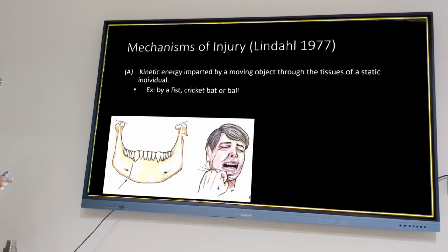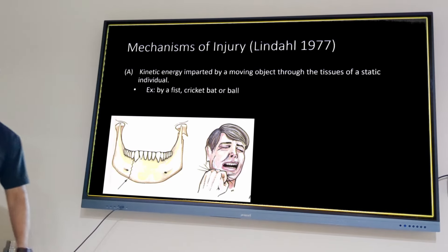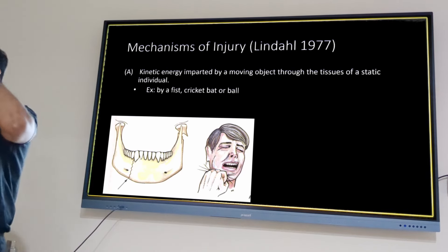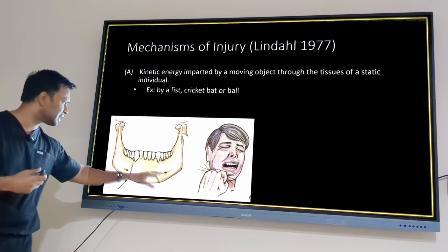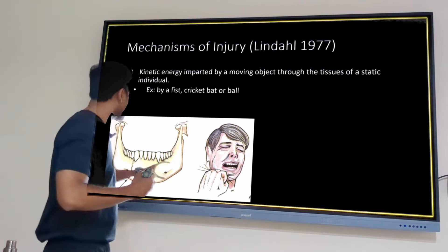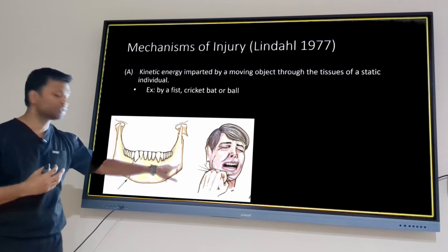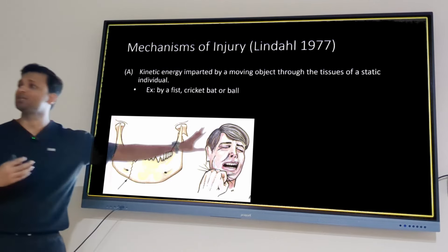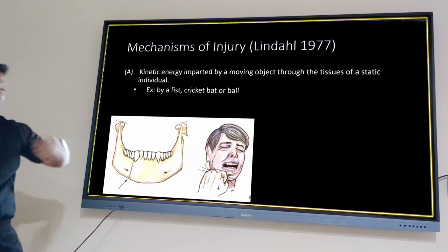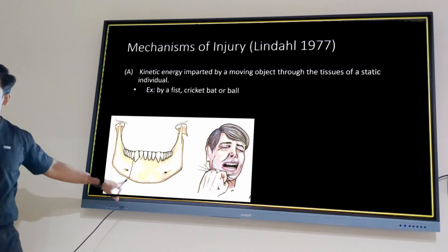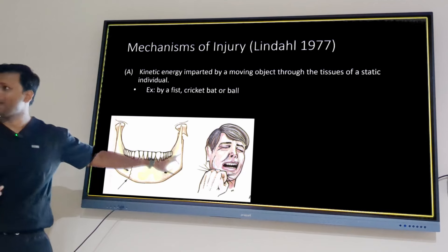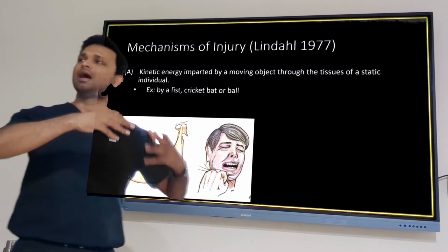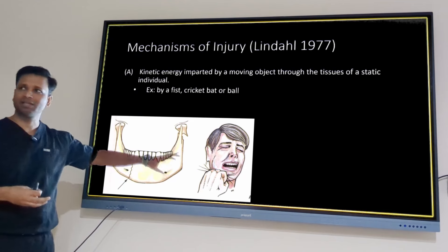The mechanism of injury, by Linder: First, when a moving object hits a stationary patient — most commonly producing a parasymphysis or body fracture. If the force is sufficient, there can be an associated contralateral angle or condyle fracture from indirect trauma. If a third molar is present, angle fracture occurs; if absent, condyle fracture occurs.